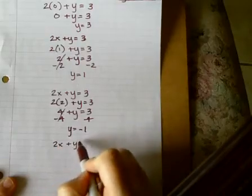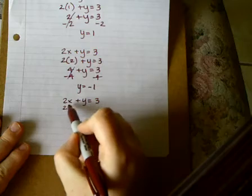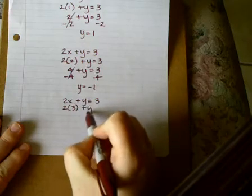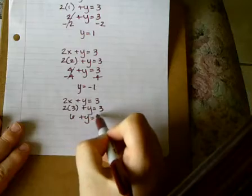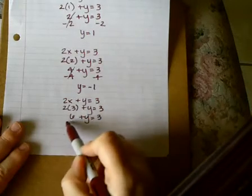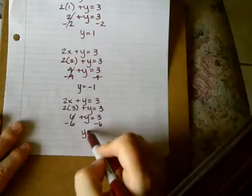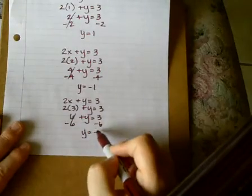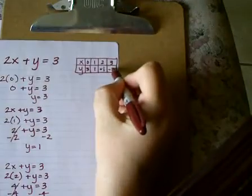2x plus y equals 3. My last value is 3. So 2 times 3, plus y equals 3. 2 times 3 is 6, plus y equals 3. To get the y by itself, I'm going to subtract the 6 to move it to the other side of the equal sign. 3 minus 6 is negative 3. Go ahead and put that last value in my chart.